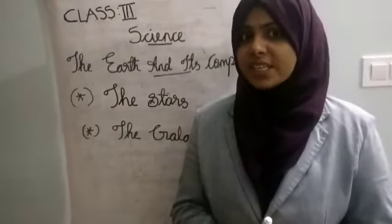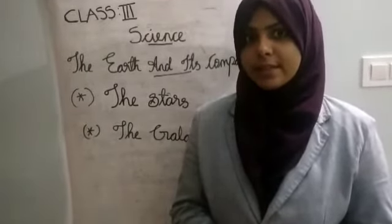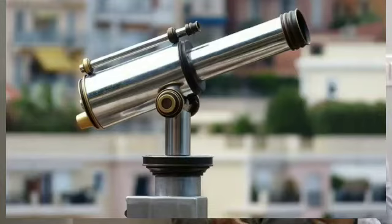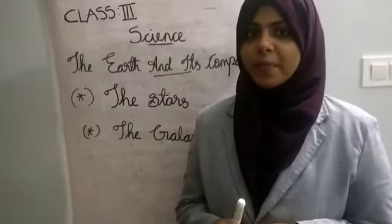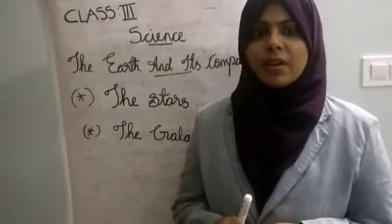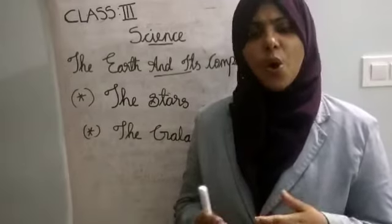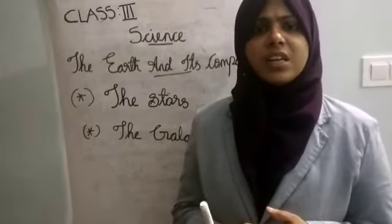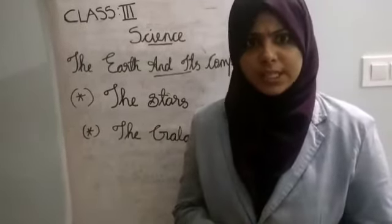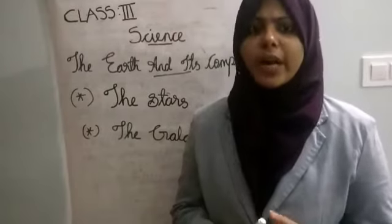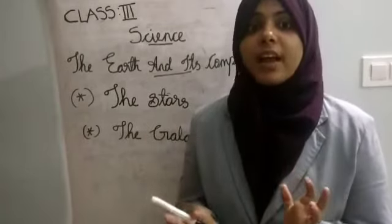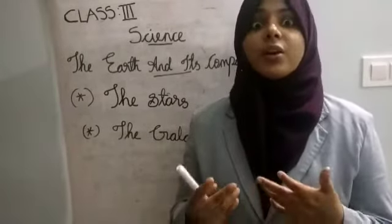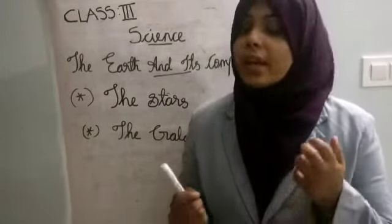Have you ever seen a telescope? Look at the picture. This is a telescope, and it is used to observe stars. Stars are there in the sky all the time, but during daytime we are not able to see them because the sunlight is brighter than the light of the stars.